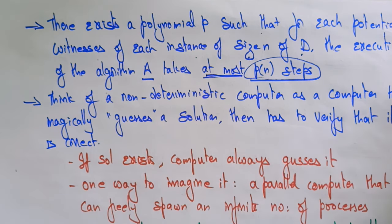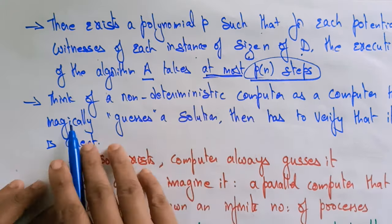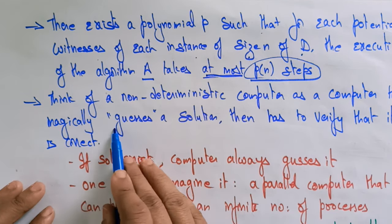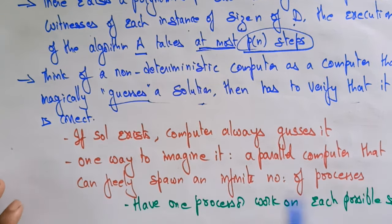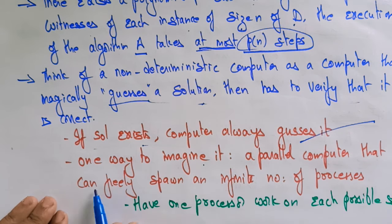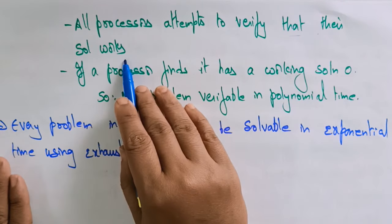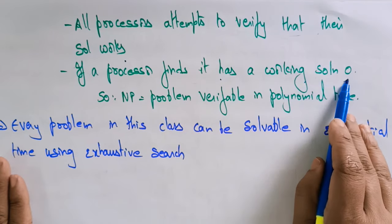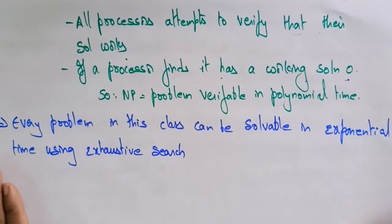In the P class, the execution always terminates in P of N steps, but here the execution of algorithm A takes at most P of N steps. Think of a non-deterministic computer as a computer that magically guesses a solution and then has to verify that it is correct. It is like a parallel computer that can freely spawn an infinite number of processes, with each processor working on each possible solution. Every problem in this class can be solved in exponential time using exhaustive search.